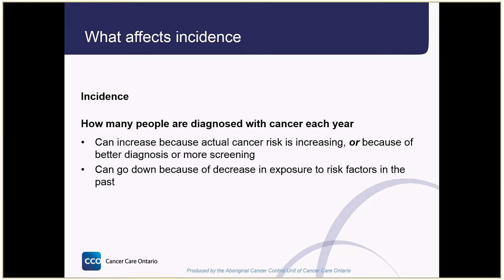So what does it mean if incidence is going up or going down? There are many things that can cause changes in incidence or new cases. We might see incidence rates increase because actual cancer risk is increasing — in other words, people are being exposed to new cancer risk factors, or to cancer risk factors more often than in the past. But we also sometimes see incidence rates go up because we are getting better at finding cancer. If we get better at diagnosing cancer, or if more people participate in screening and get checked for early signs of cancer, new cancer cases will be caught that would not have been in the past.